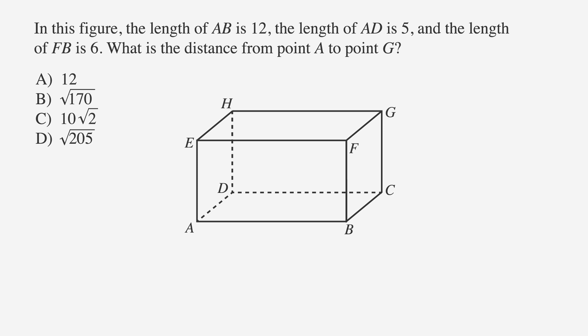Now, while it's still fresh in your head, let's use the same rectangle to learn about finding the long diagonal. In this figure, the length of AB is 12, the length of AD is 5, and the length of FB is 6. What is the distance from point A to point G? And here are our answer choices. So we're being asked for the long diagonal, or space diagonal, of the rectangular solid, shown here as the length between points A and G.